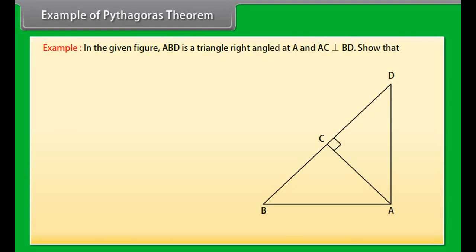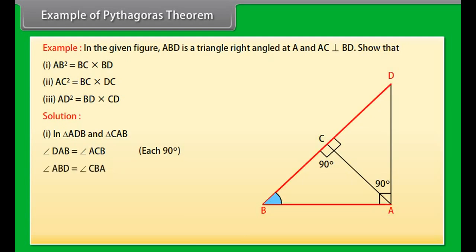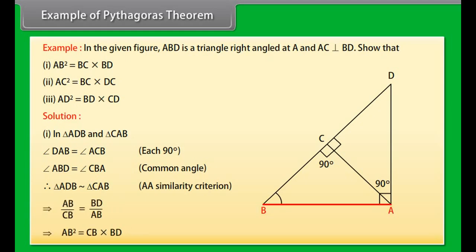Example: In the given figure, ABD is a triangle right angled at A, and AC is perpendicular to BD. Show that: (1) AB² equals BC times BD, (2) AC² equals BC times DC, (3) AD² equals BD times CD. Solution part 1: In triangles ADB and CAB, angle DAB equals angle ACB (each 90°), and angle ABD equals angle CBA (common). Therefore triangle ADB is similar to triangle CAB by AA similarity, which implies AB² equals CB times BD.